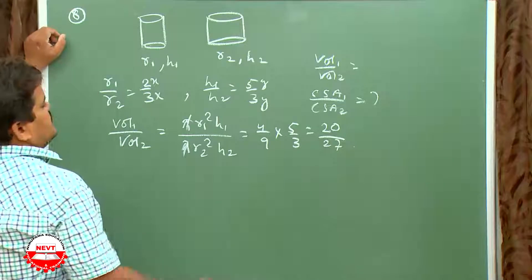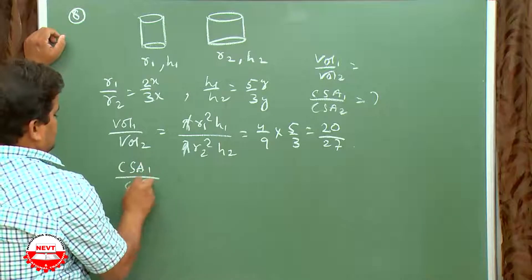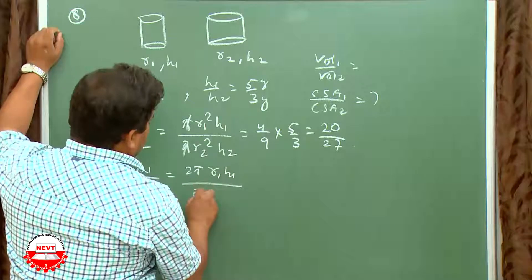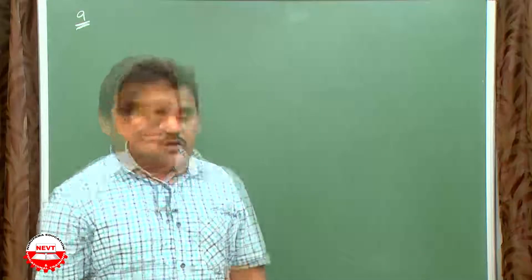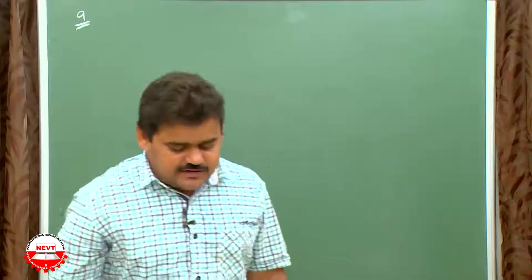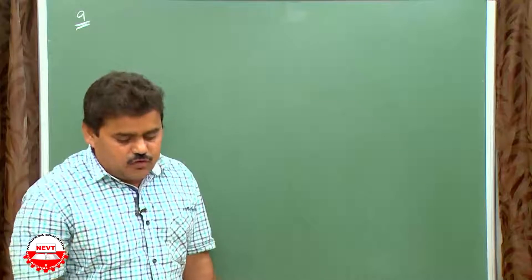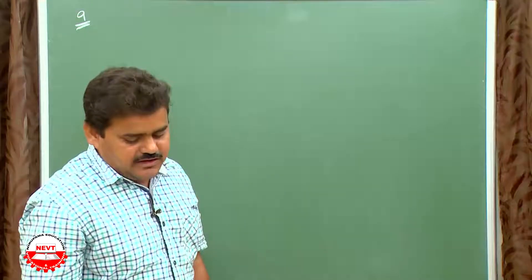Similarly, curved surface area ratio: 2πR1H1 / 2πR2H2 = (R1/R2) × (H1/H2) = (2/3) × (5/3) = 10/9.